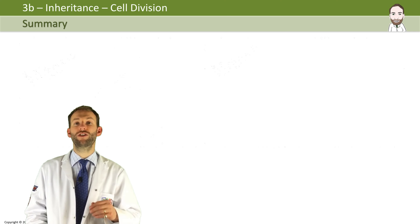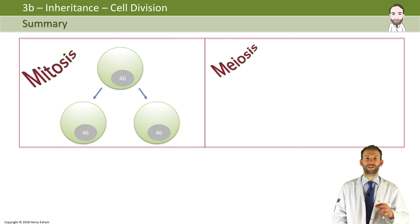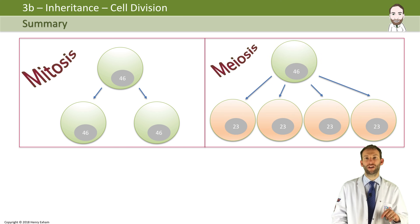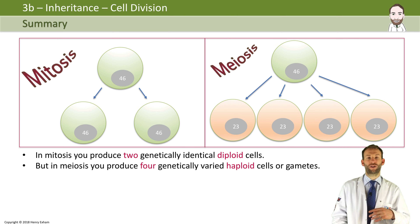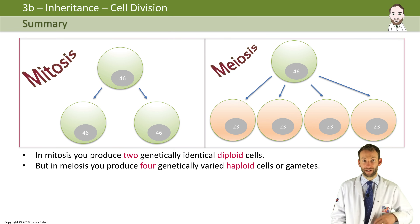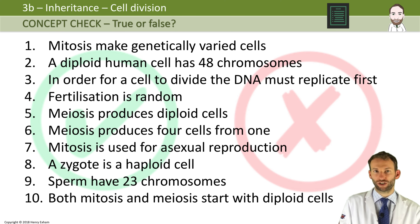To summarize the two methods of cell division — mitosis and meiosis — mitosis takes one diploid cell with 46 chromosomes and produces two diploid daughter cells. Meiosis takes one diploid cell with 46 chromosomes and produces four haploid cells with 23 chromosomes each. Why not have a go at these 10 true or false questions to see if you understand this topic well.